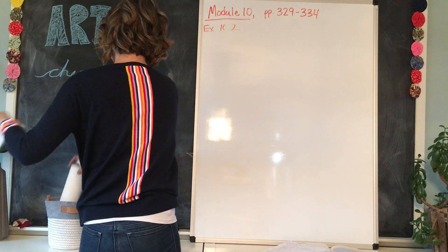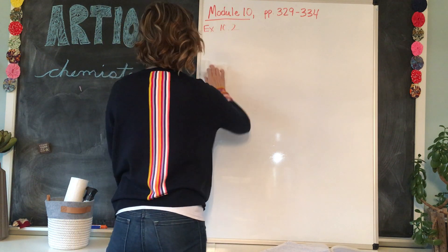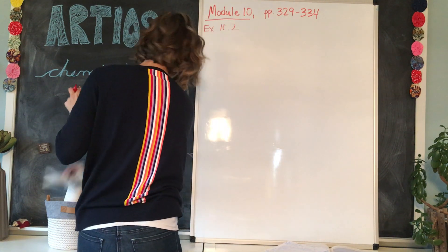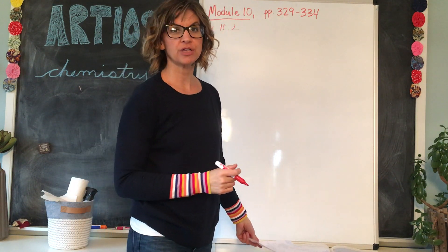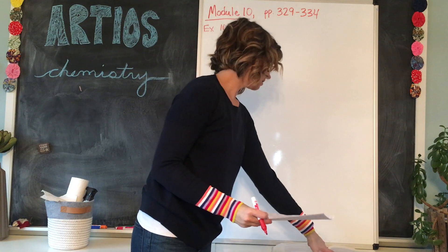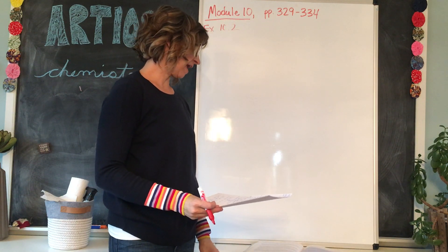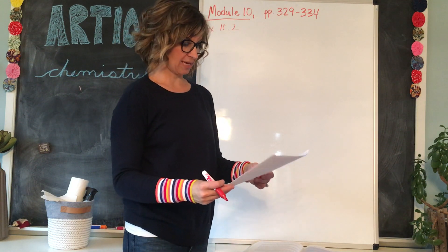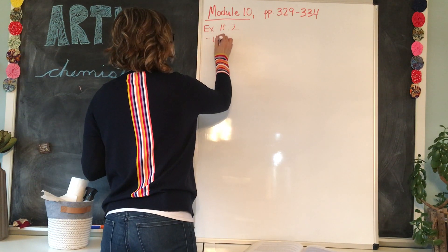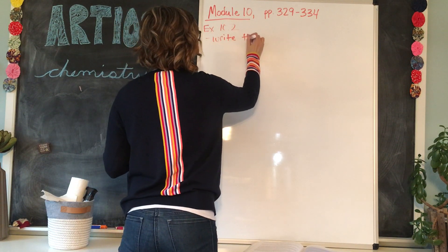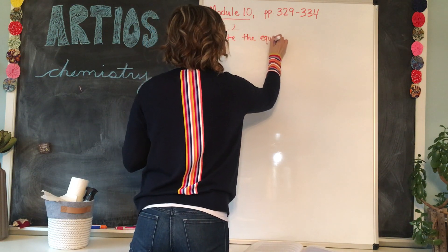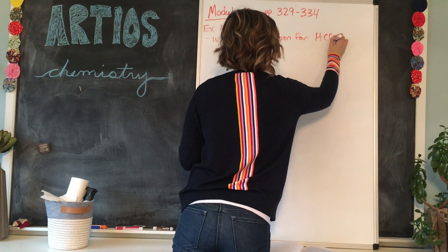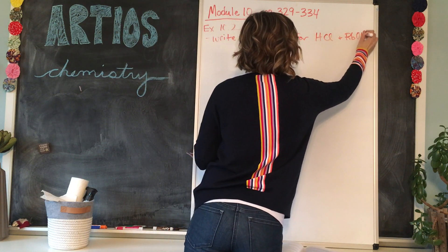10.2. I need to dry this off a little bit better. So flip to page 10.2 or example 10.2. It's on page 331 and it says give the balanced chemical equation that represents the reaction between HCl and RbOH. We're going to go ahead and take out a few of those words and we'll say write the equation for HCl and RbOH.